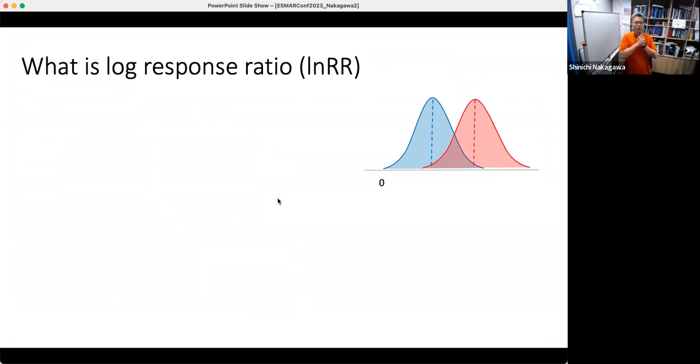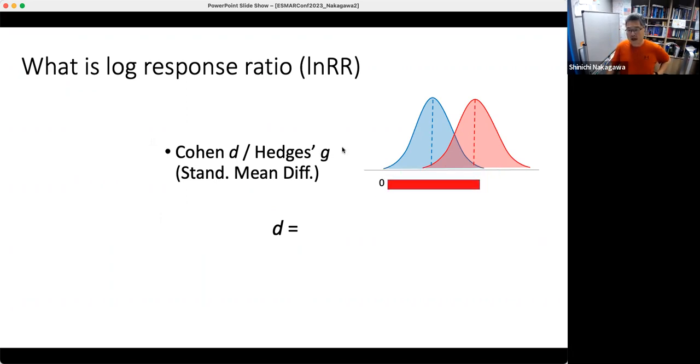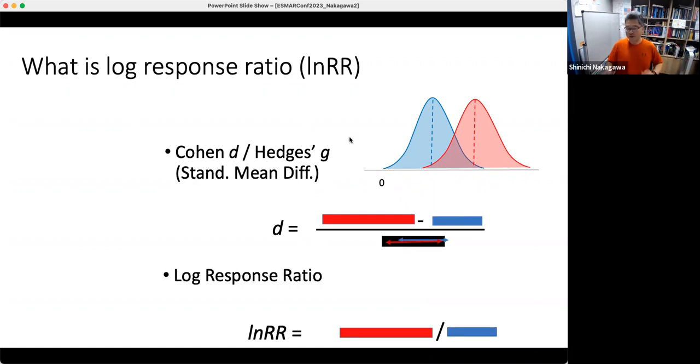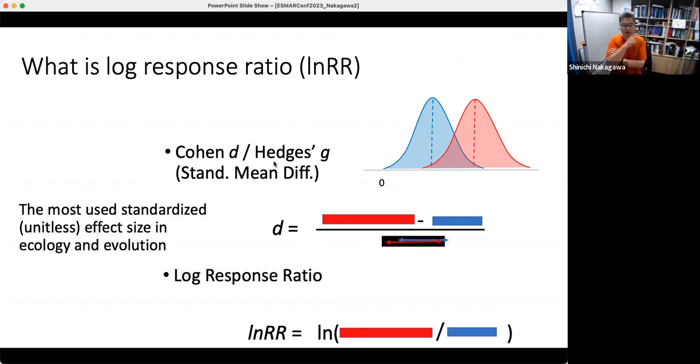I think some of you may be familiar with log response ratio, but everybody probably knows Cohen's D, Hedges G. This is just a small sample size correction version of Cohen's D. More generally, they are known as standardized mean difference. So D equals mean minus another mean divided by pooled standard deviation. The log response ratio is a ratio of two means, and it's logged. And it turns out to be the most used standardized or unit-less effect size in ecology and evolution. So it's important effect size for evolution biologists like myself.